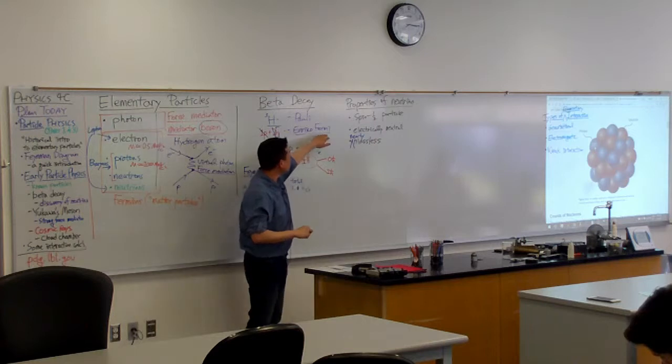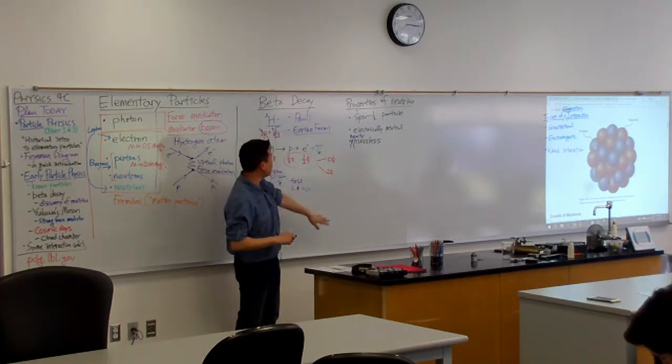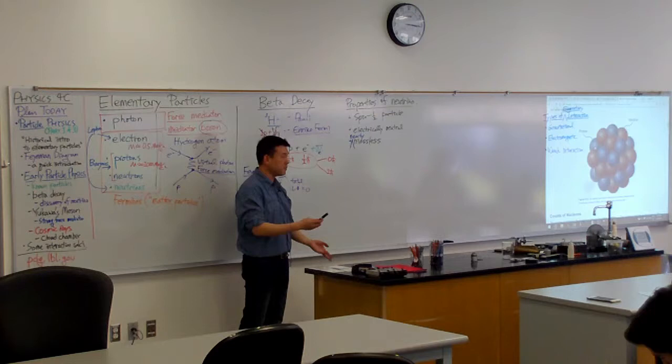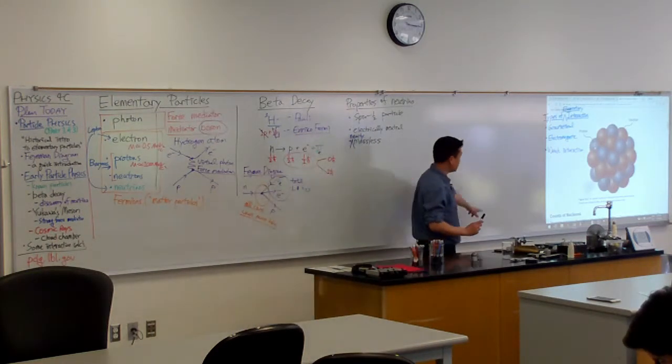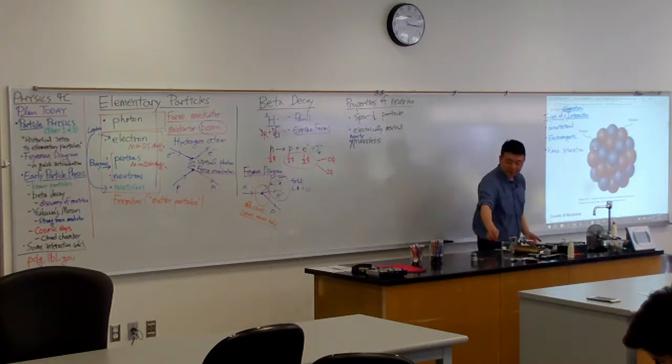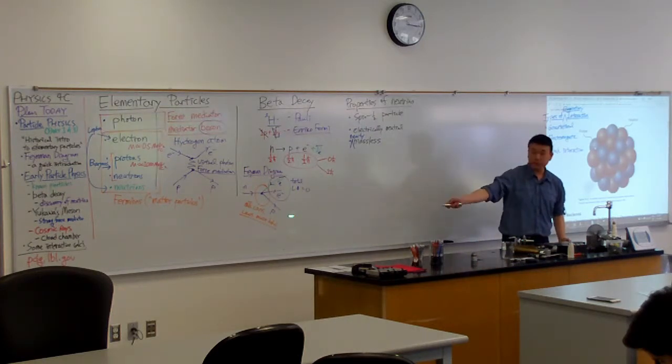Enrico Fermi is the one who came up with a theory of beta decay that correctly predicted some of the decay rates. That is the theory of weak interaction. The picture I'm presenting here is not actually the full theory of interaction.